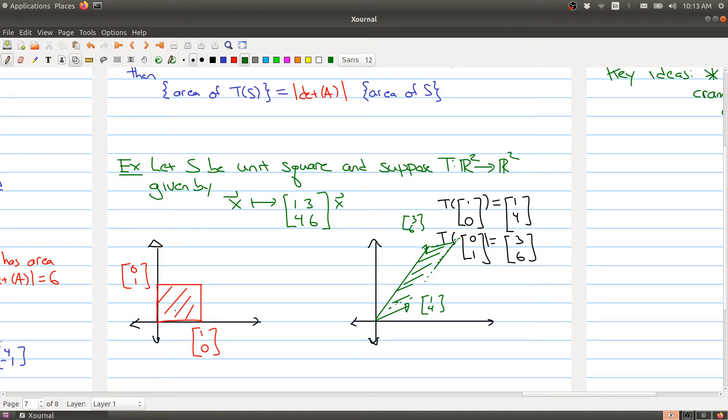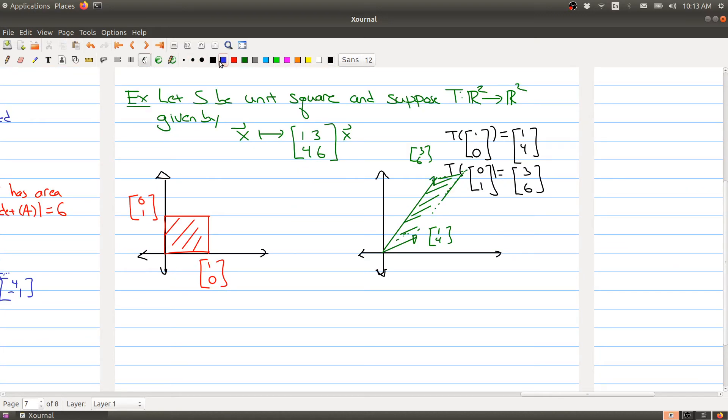This is the parallelogram. So any point in the red box gets mapped over to something in the green box. And we can now relate here the area. So the area of TS, and then I'll just put the green box, is equal to the absolute value of the determinant of A times the area of S. And this is the red box. And the determinant of A in this case, and the absolute value, is 6 in this case. And the area of this guy is 1. So the area of the whole thing is 6.